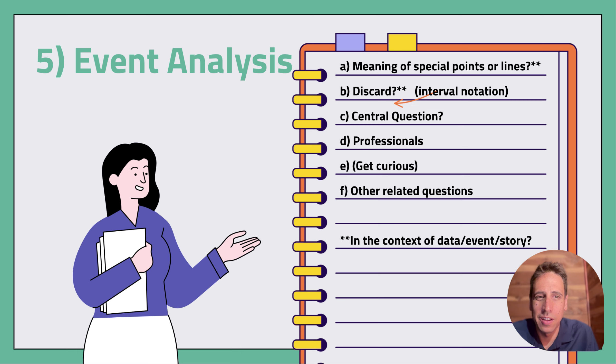Next, what can you discard? There might be, mathematically, we might be able to trace out the graph to all corners of the viewing window, and you might be able to see quite a bit, but actually there might be a lot of the graph that you can discard when you consider the context of the actual event or the story that you're trying to tell. Negative numbers are classic in this.